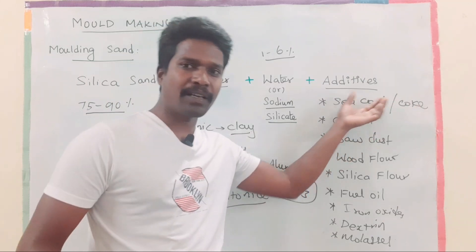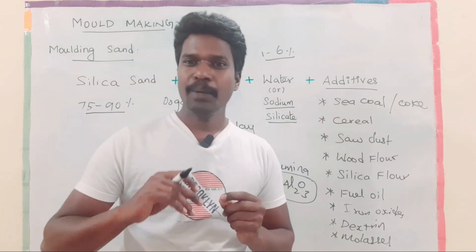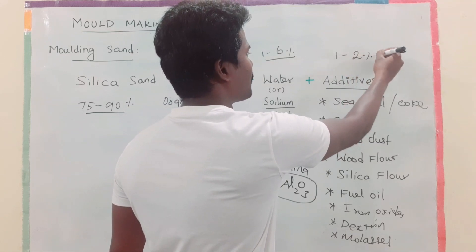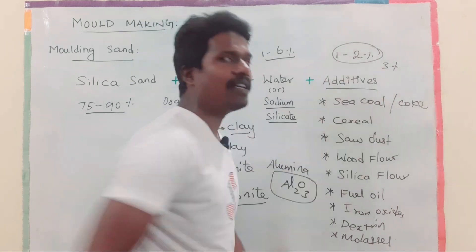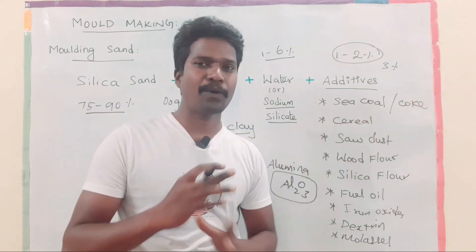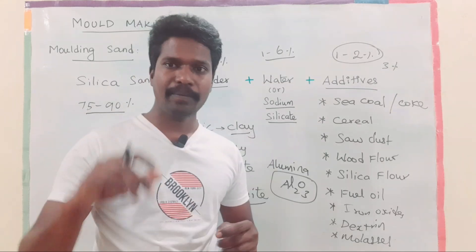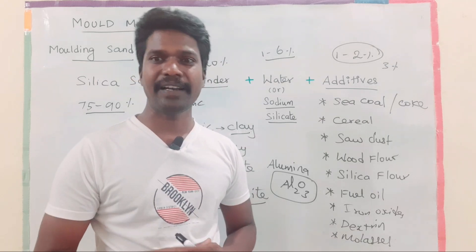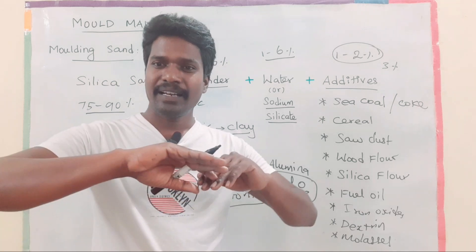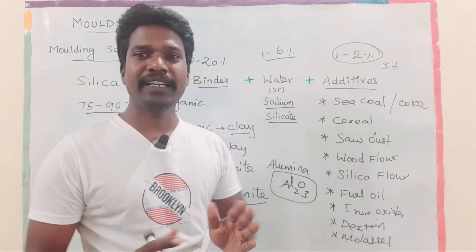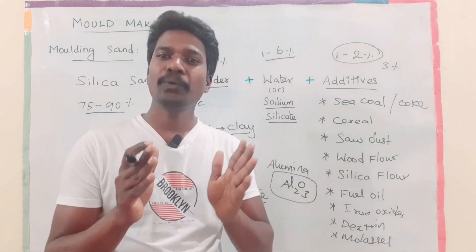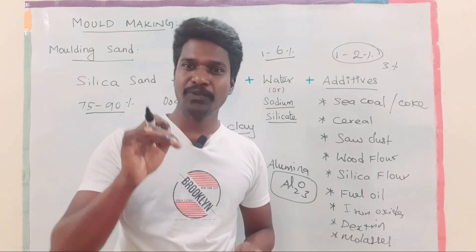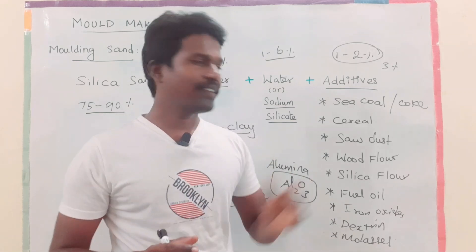Sea coal and coke are used in powder form and added to molding sand. Generally, the quantity added is around one to two percent. The purpose is to achieve a smooth surface on the casting.